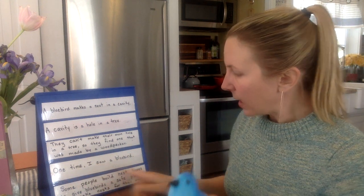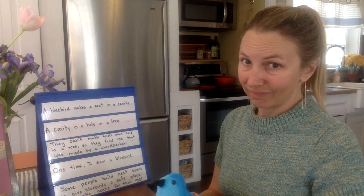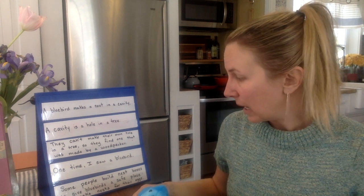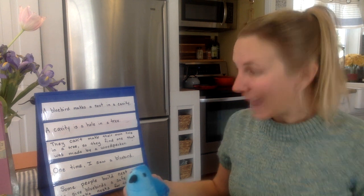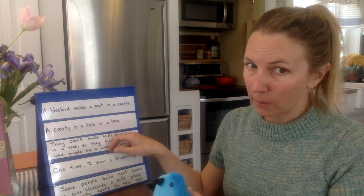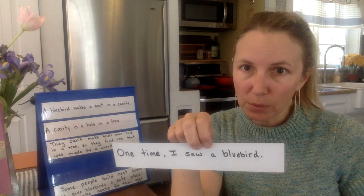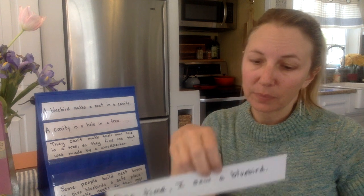One time I saw a bluebird. That's a story — that doesn't even belong really in an information book, unless I'm telling a story that's going to give some information about nests or about the bluebird. That belongs in a narrative, in storytelling with a beginning, middle, end — maybe with characters, maybe with a problem and a solution. That belongs in a story. That is not information about nests. It doesn't help us understand nests or nesting behaviors or nesting words any better. So I'm going to take that one out — it does not belong.